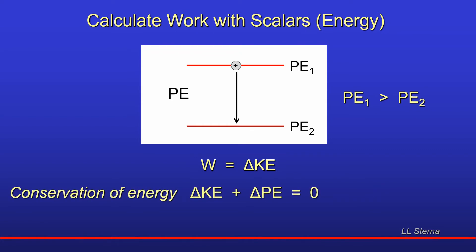Now, in this picture with a charge moving from one level to another, energy is conserved — there's no friction in a simple picture like this. Conservation of energy means the total energy is conserved. Therefore, the change in kinetic energy plus the change in potential energy sums to zero. So delta KE equals minus delta PE. If potential energy goes down, kinetic energy goes up, and vice versa. We can write our expression for work in terms of potential energy: work equals negative the change in potential energy.